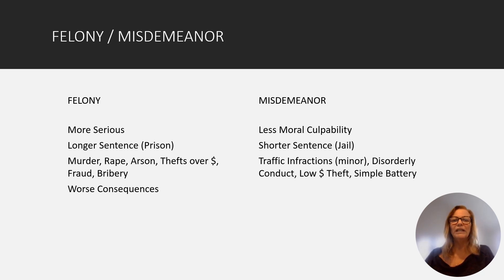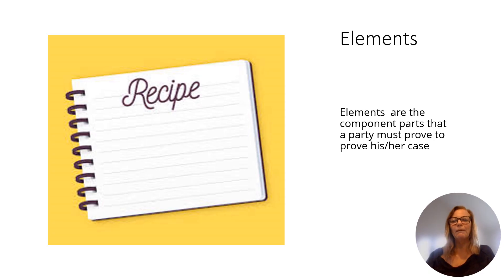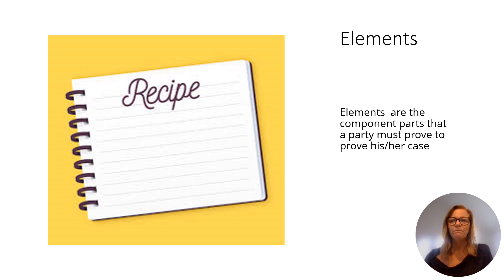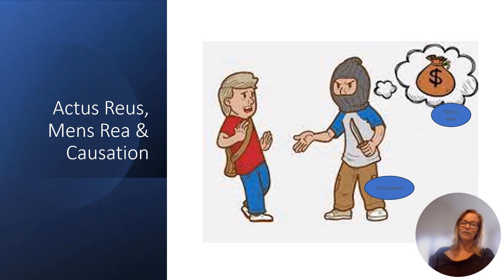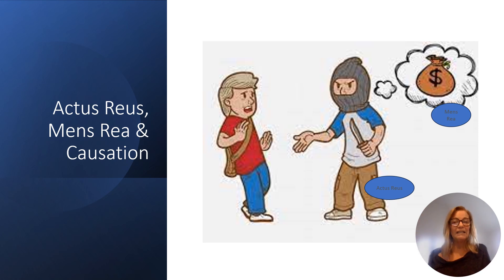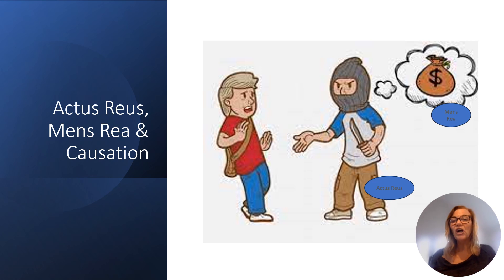Regardless of whether we have a felony or a misdemeanor, we need our elements — the component parts that a party must prove in their case. In criminal law, generally speaking, you're going to have three major components. You're going to have an actus reus, which is the actual physical action that's prohibited or required — you can actually be convicted for not doing something, such as filing your tax returns. We will have our mens rea, which is your mental state. Different crimes and different levels of punishment are based on whether you knowingly, recklessly, negligently, or intentionally did something. And then causation — you have to cause something to happen due to your actus reus.